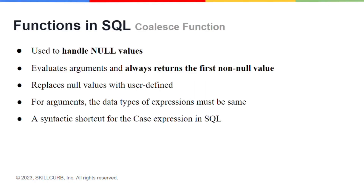The COALESCE function in SQL is used to handle null values. This function evaluates arguments in a particular order from the provided argument list and always returns the first non-null value that it finds. During this expression evaluation, the null values are replaced with user-defined values. It is to be remembered that the data type of the expression must be the same for all arguments.